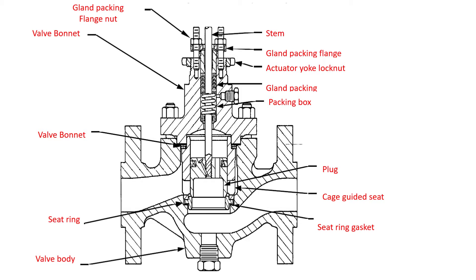Next we have the valve bonnet. The bonnet is a major pressure-containing component; it is bolted or threaded onto the valve body. It locates and guides the valve stem and also includes the bore for the packing — that is the gland packing. The bonnet also includes a yoke, which is used mainly to mount the actuator. This is the valve bonnet.